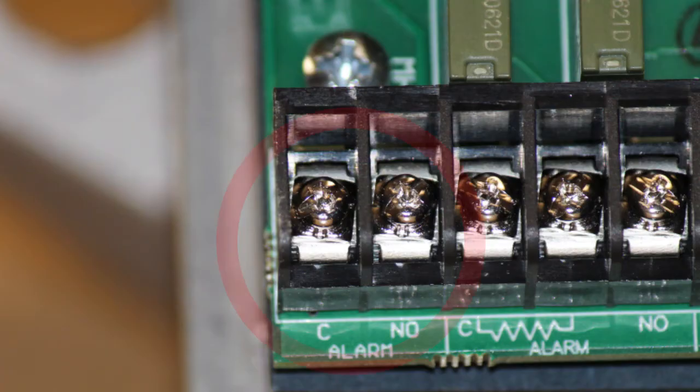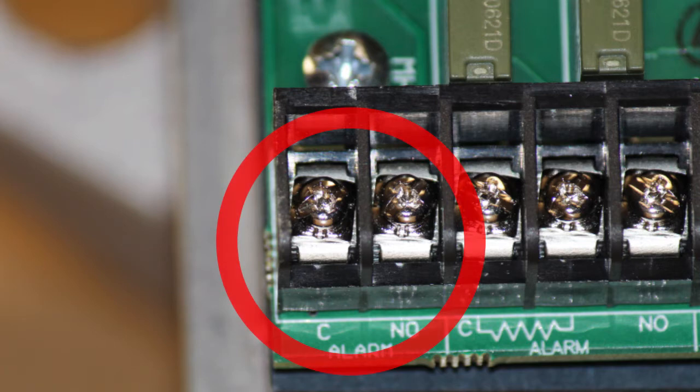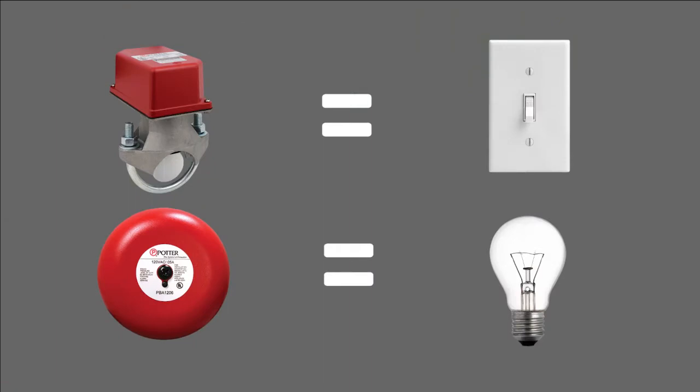The last two terminals on the left are a set of normally open dry contacts. These will typically be used to operate a local bell. These are just open switch contacts, do not connect power directly to them. They can be used to switch power through them to operate a bell just like a light switch is used to switch power to a light.